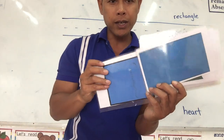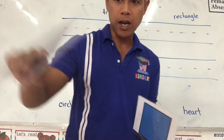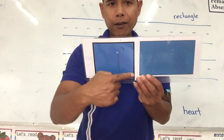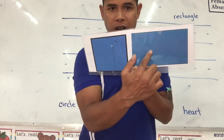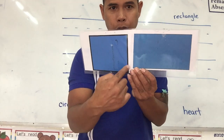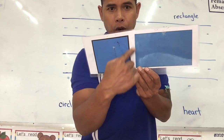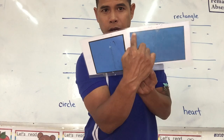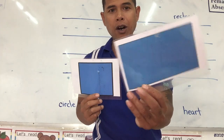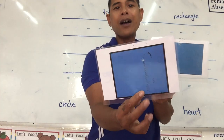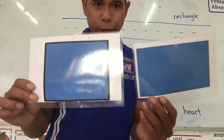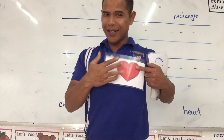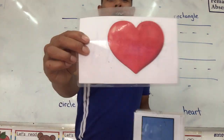Let me show the difference between this one and this one. This one has four equal sides — that is a square. A rectangle has one short side and one long side. See that — this one is long and this one is short. So this is called a rectangle. Next one — yes, it is a heart.